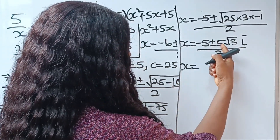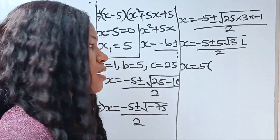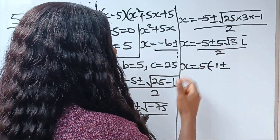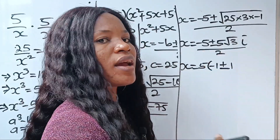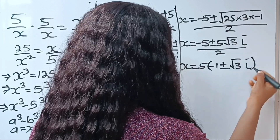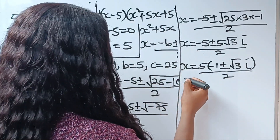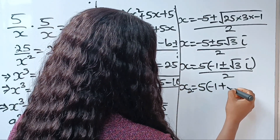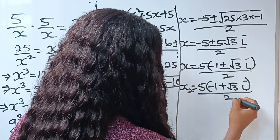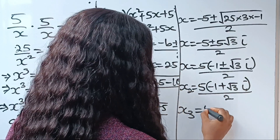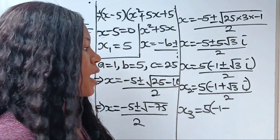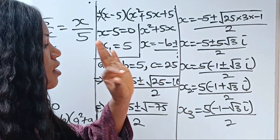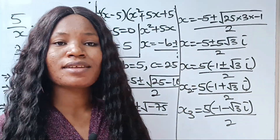Notice that we have minus 5 and 5, so we factorize. Minus 5 divided by 5 gives minus 1, and plus or minus 5 divided by 5 gives 1, so we write root 3i, divided by 2. This gives us x₂ is equal to 5 times the bracket minus 1 plus square root of 3i, everything divided by 2. While x₃ is equal to 5 times the bracket minus 1 minus root 3i, everything divided by 2. And there you have it — the three values of x. Thank you so much for watching and have a lovely day.